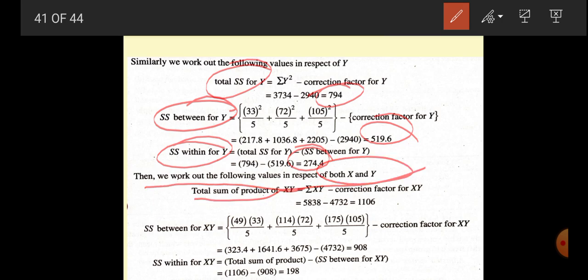Total sum of the product of XY we have got 11,106. SS between for XY is this. SS within for XY is 198. The formula is the same, you have to do it for X, then for Y, then for XY.